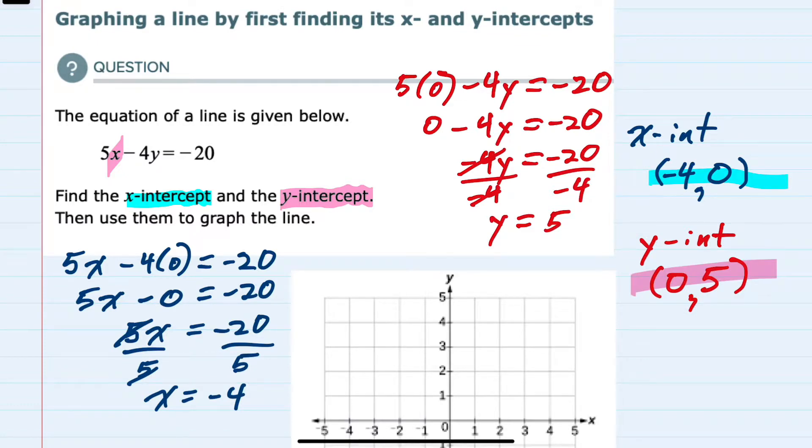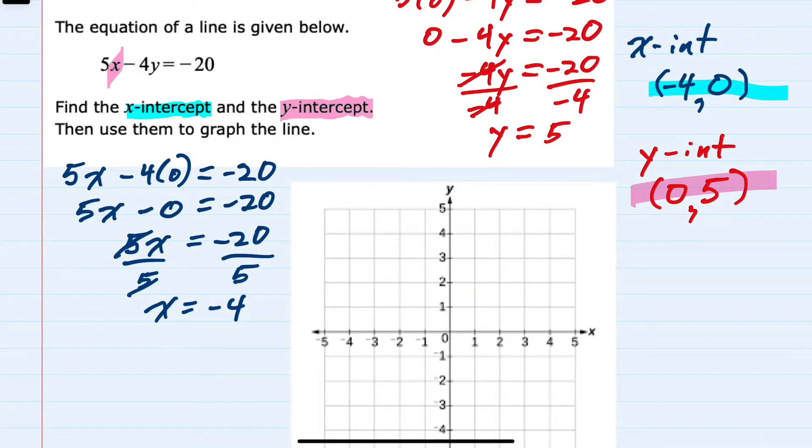And with these two values, we can graph because our x-intercept is negative 4, 0. That's this point, negative 4, 0.